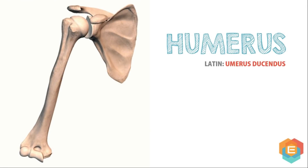In this video we are going to learn about the humerus bone and its anatomy. Humerus is the longest and also the strongest bone of the upper limb. Many muscles which manipulate the arm, the forearm, the elbow, and the shoulders are anchored to the humerus.